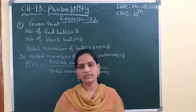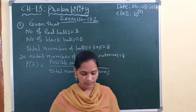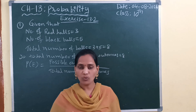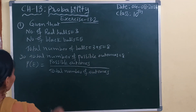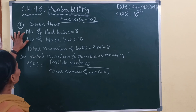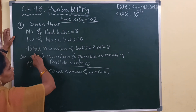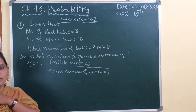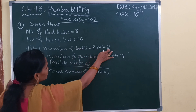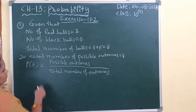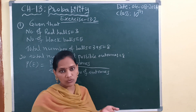We should find the probability of getting a red ball and also not a red ball — these two situations. First, you should know what is the given information in the question. I wrote already exercise 13.2 first question. In the question, they give number of red balls: 3, number of black balls: 5. Total number of balls: 3 plus 5 is equal to 8.